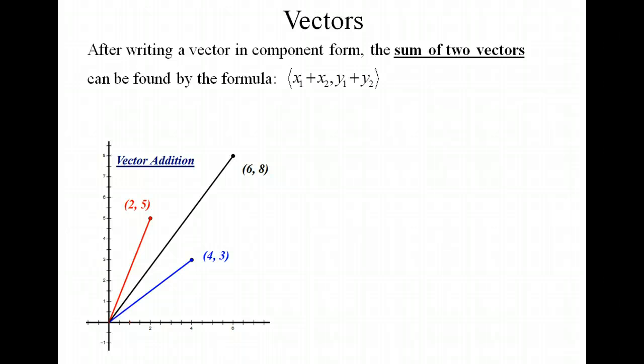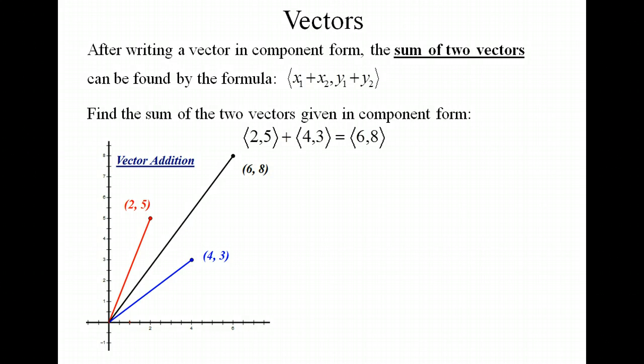After writing a vector in component form, we can easily find the sum of the two vectors. In the drawing that we have here, we have a vector that ends at the ordered pair 2,5, and a second vector that ends at the ordered pair 4,3. The sum of those vectors is shown to be 6,8. And we got that by adding together our x coordinates, 2 and 4, to get our x coordinate of the sum, and then add together our y coordinates to get the y coordinate of the sum, 6,8.